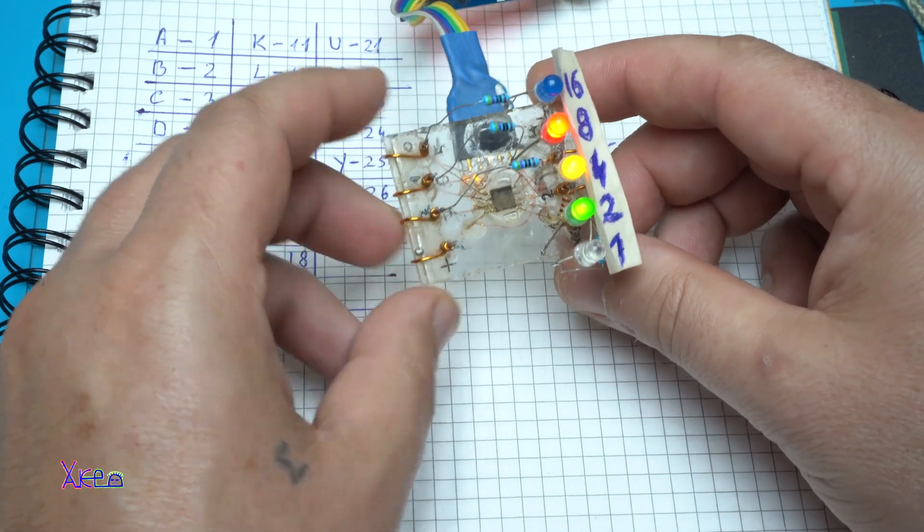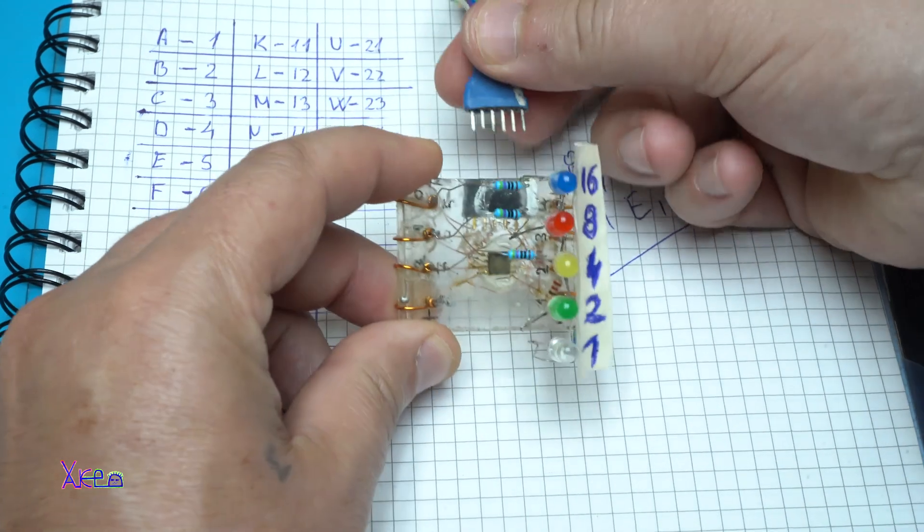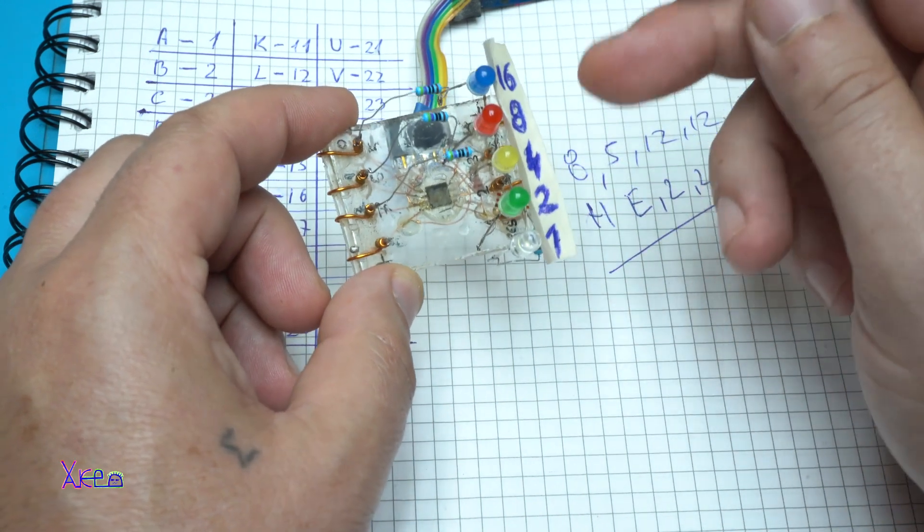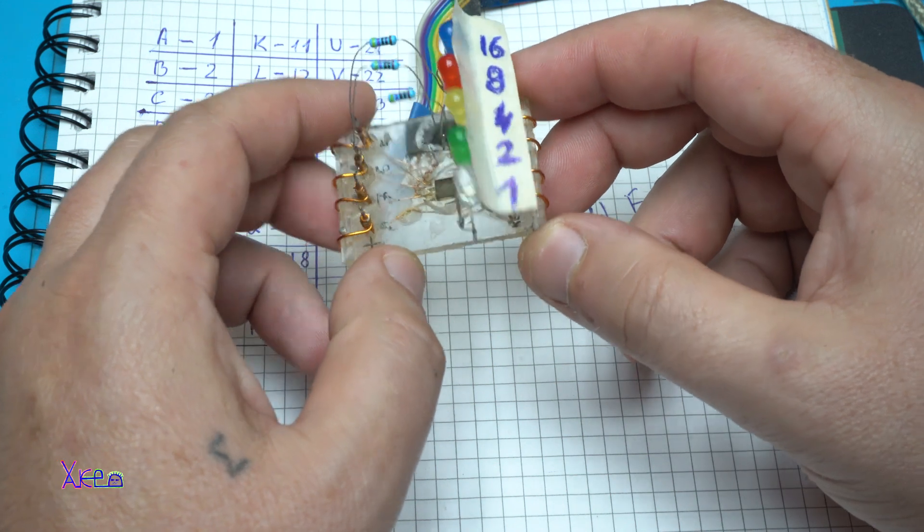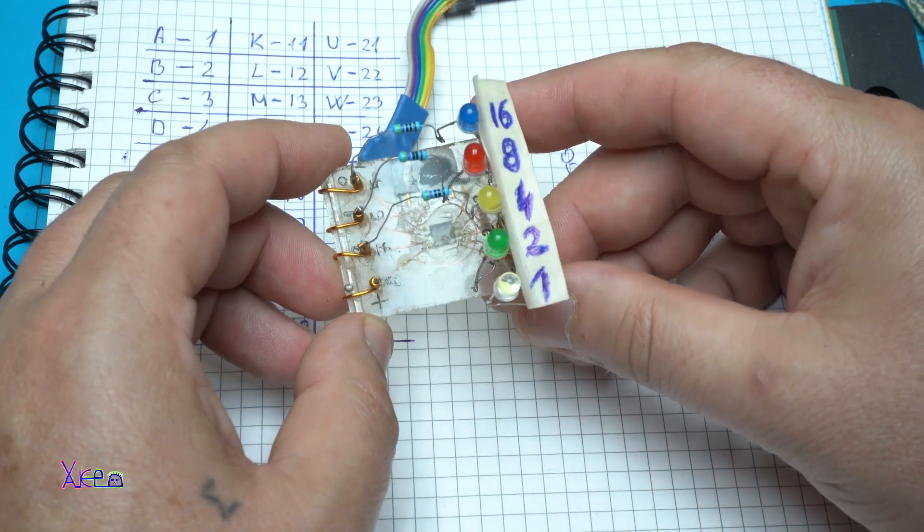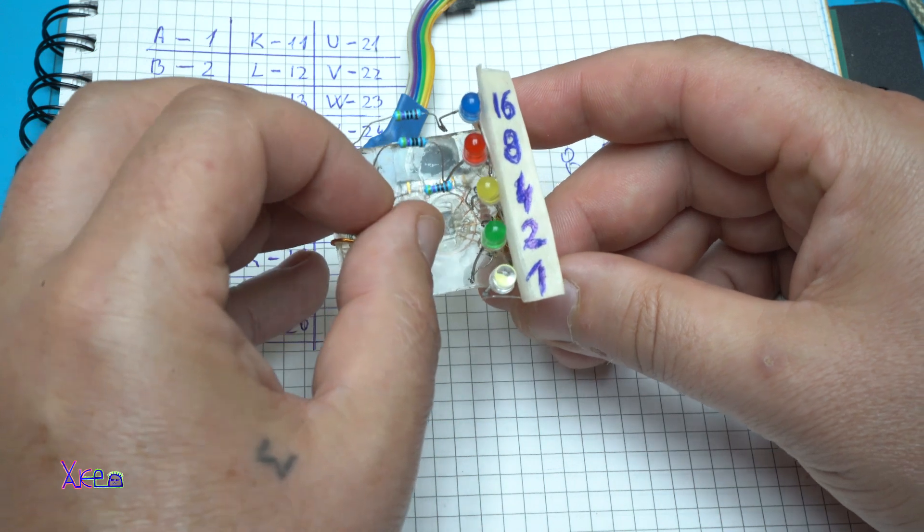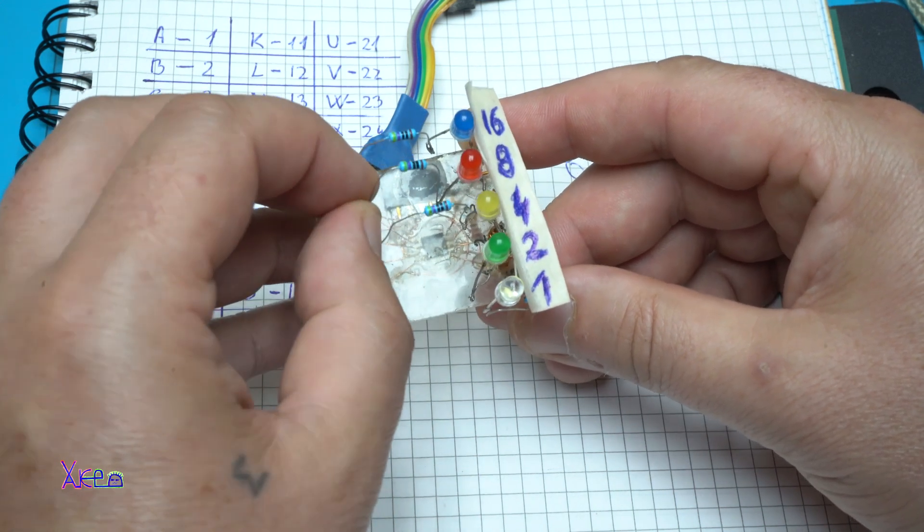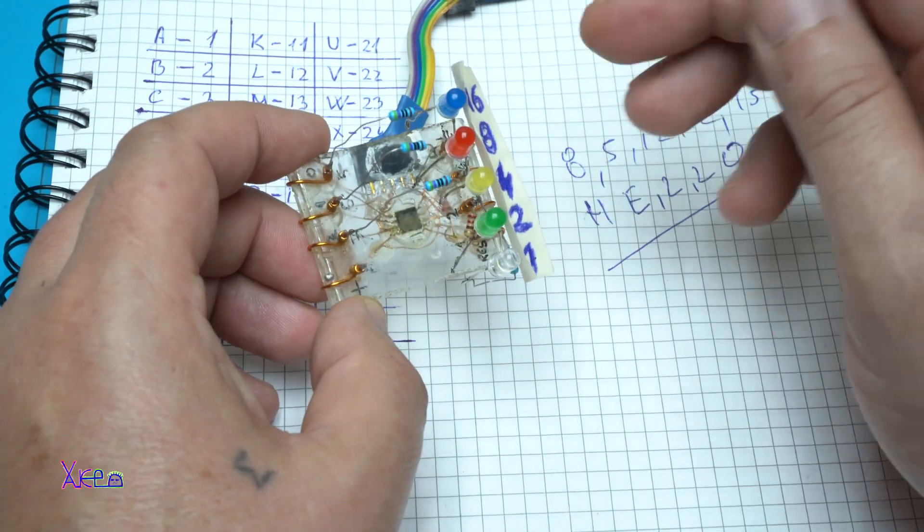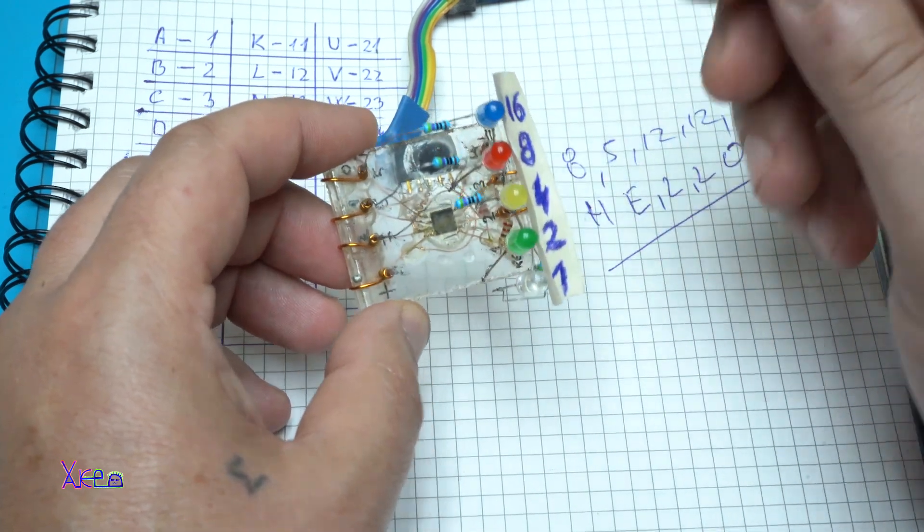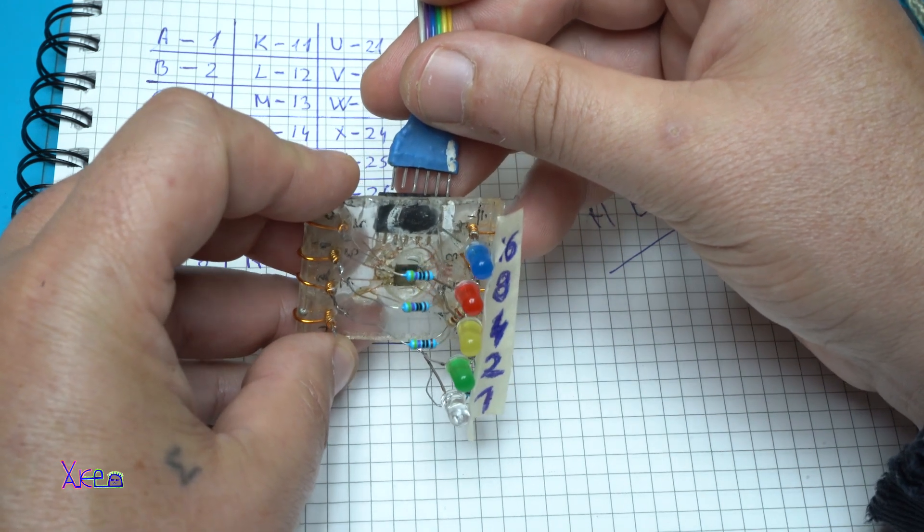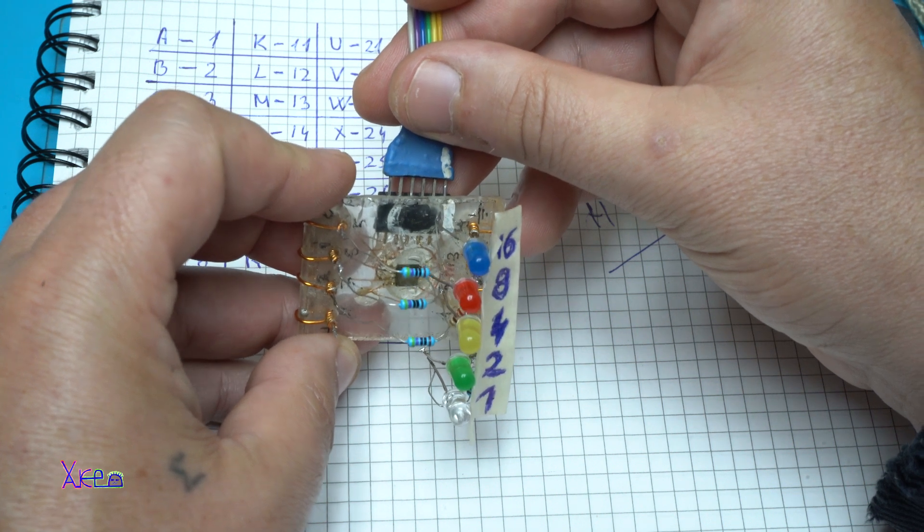And now I have a task for you. I'm gonna disconnect, and right now there is a message shown on the gadget. If someone decrypts this message and writes it in the comments below, I will give them a shoutout in the next video and say hello. That will be the prize if you guess what message will be shown right now. Take your pens and write down the binary numbers.